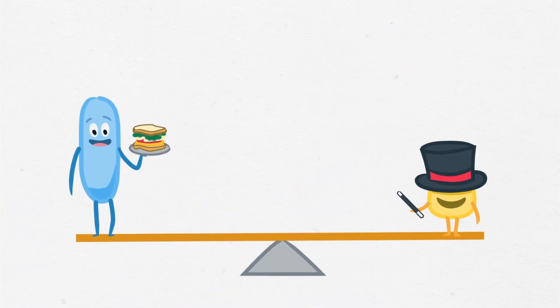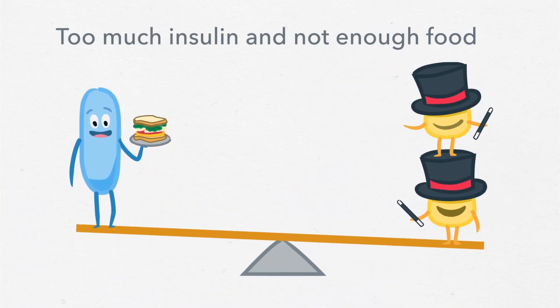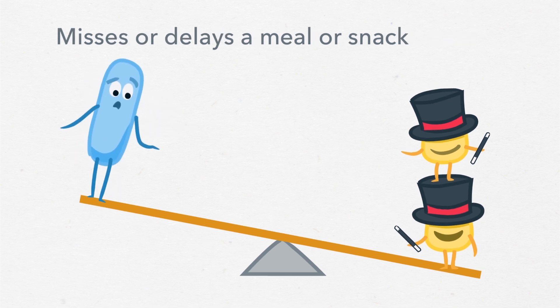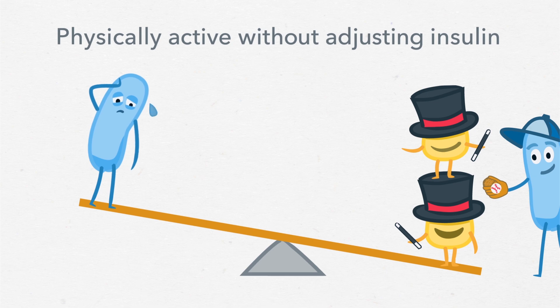Blood sugar can drop too low if a student has too much insulin and not enough food, misses or delays a meal or snack, or is physically active without adjusting food or insulin.